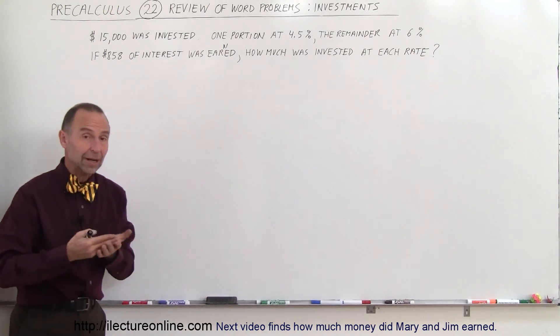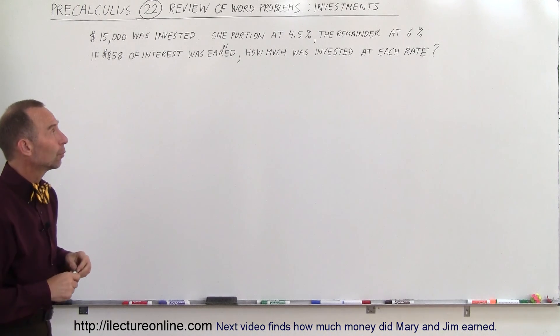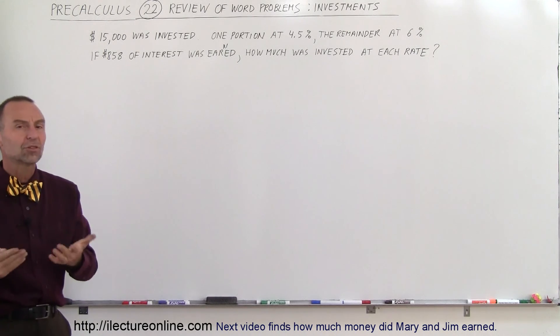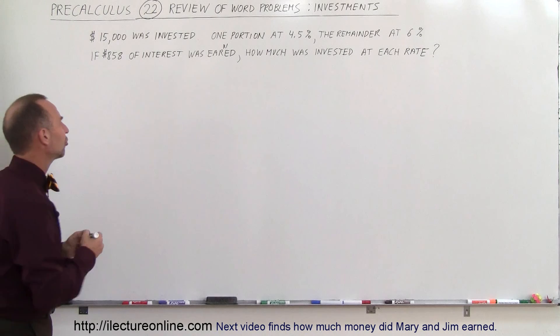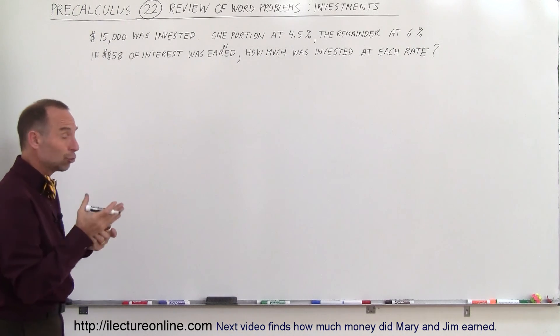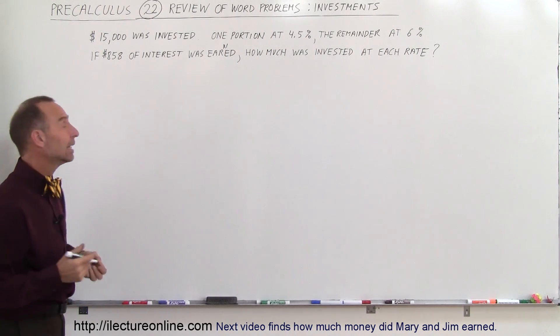So the idea here is to figure out how much we put at each different rate. How much at 4.5%, how much at 6%. And the way you want to start is to represent in terms of x, the amount you invest in each case.